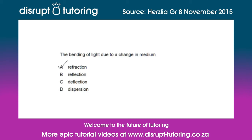Reflection is not the answer because reflection is when light bounces off a medium and returns to the direction of the source. Deflection is also not the answer because deflection means a change in the velocity of an object resulting from a collision, for example with a surface.